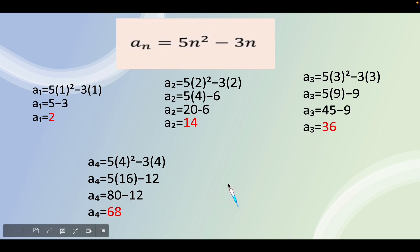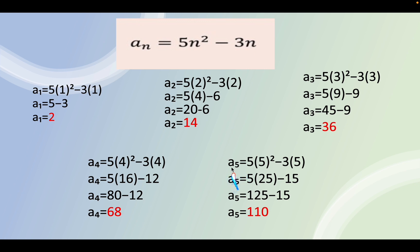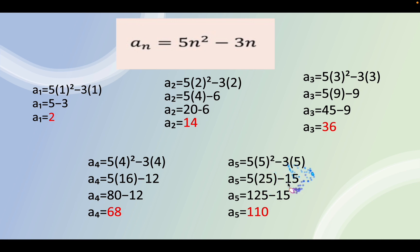For the last term, a sub 5 equals 5 times 5 squared minus 3 times 5. Since 5 squared is 25, we get 5 times 25 which is 125, minus 3 times 5 which is 15. So the answer for the fifth term is a sub 5 equals 110.